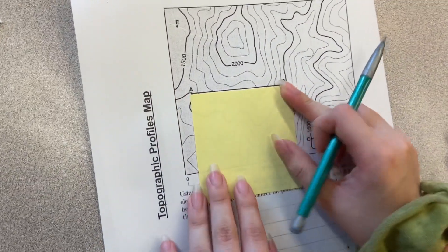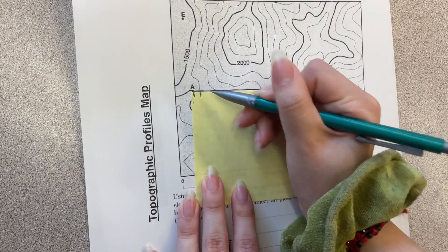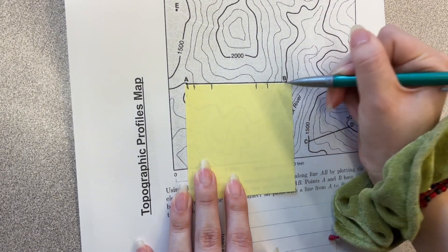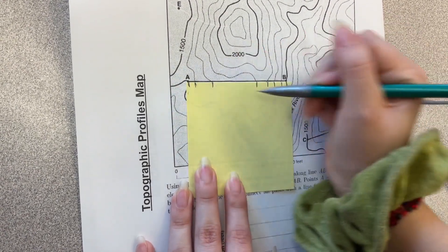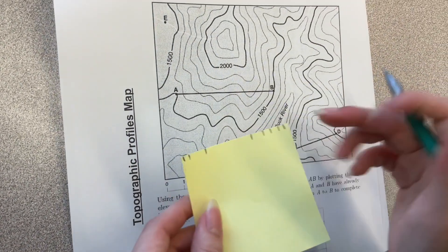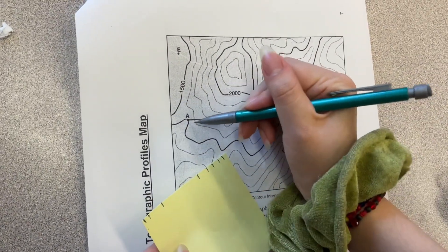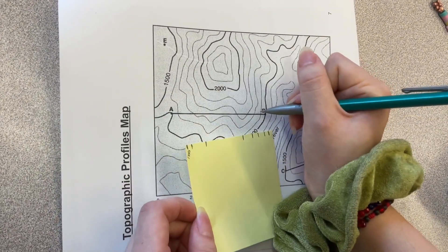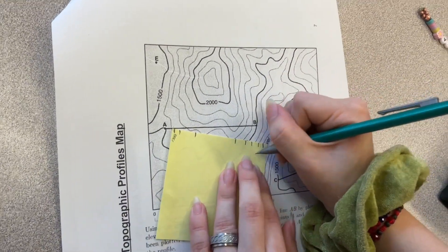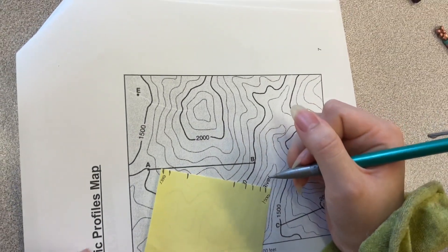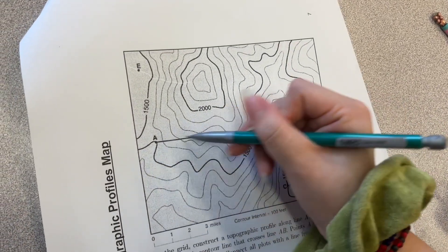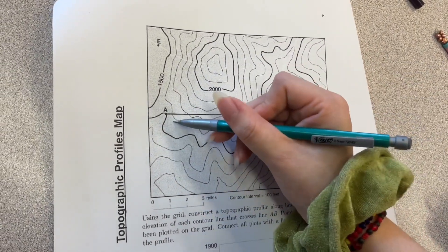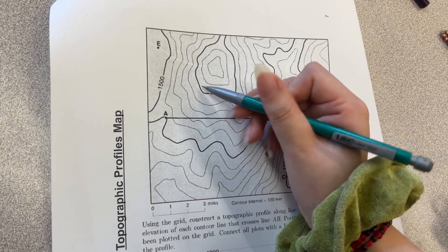So first, just label all the contour lines that are crossing the line segment. So this AB, this is all of them. And then you want to label their elevations. So A is 1500, so you can label 1500 there. And then B is also 1500, so that's 1500 there. And then to figure out these, you have to look at the contour interval, so 100 feet. And we can identify that it's going up by 100 feet each time because it gets to 2000 over here.